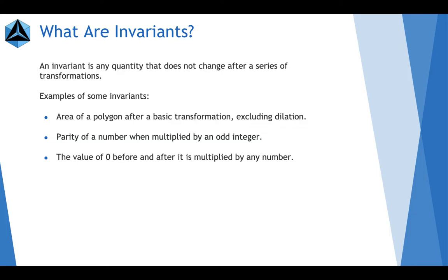The value of 0 before and after it's multiplied by any number. If you take 0 and multiply it by a number, you're going to get 0. So, the value of 0 there is invariant. Percent mass composition of oxygen and water after being heated. It's still going to be H2O.